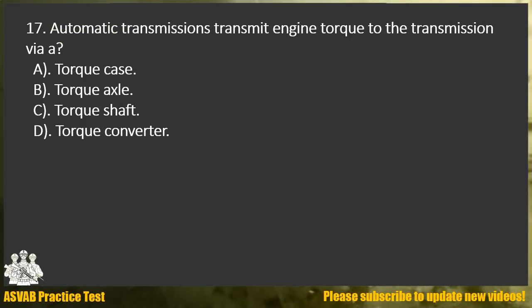Question 17. Automatic transmissions transmit engine torque to the transmission via: A. Torque case. B. Torque axle. C. Torque shaft. D. Torque converter.